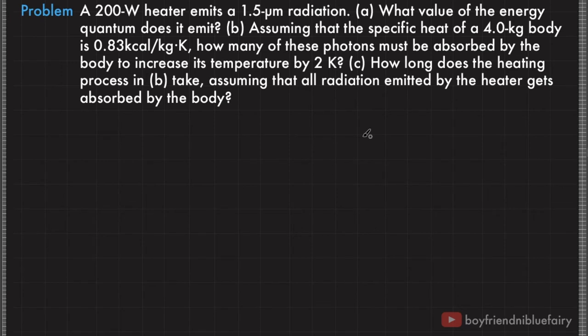This problem is from OpenStax University Physics Volume 3, Chapter 6, Photons and Matter Waves, Problem 55. A 200-watt heater emits 1.5 micrometer radiation. What value of the energy quantum does it emit? Assuming the specific heat of a 4.0 kg body is 0.83 kilocalorie per kilogram-Kelvin, how many photons must be absorbed by the body to increase its temperature by 2 Kelvins? How long does the heating process take, assuming all radiation emitted by the heater gets absorbed by the body?